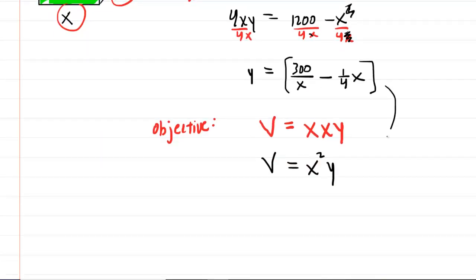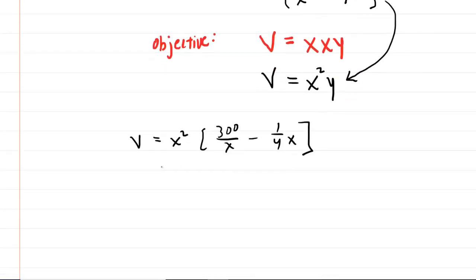We will now go ahead and plug that into our objective. So now we have volume is equal to X squared multiplied by 300 over X minus 1 fourth X. So this is nice. We have our objective equation in terms of a single variable X. We will next simplify this equation. So we're going to distribute the X squared.